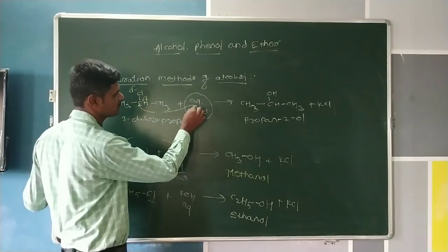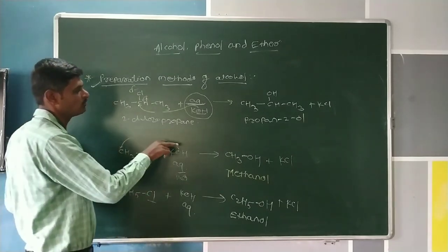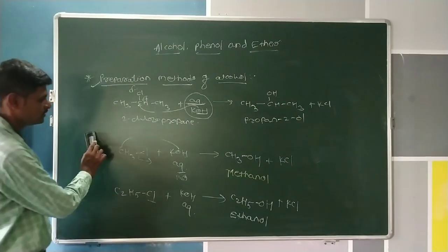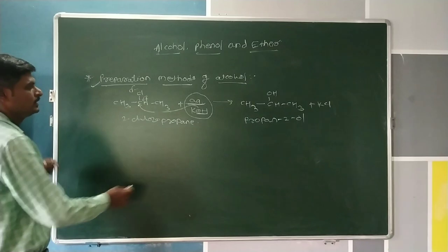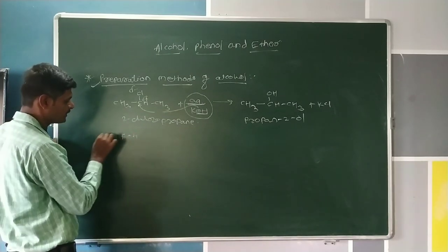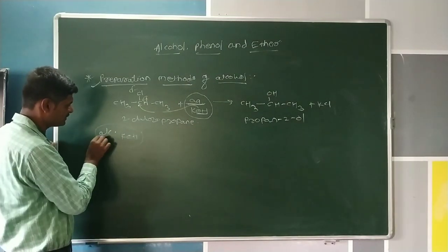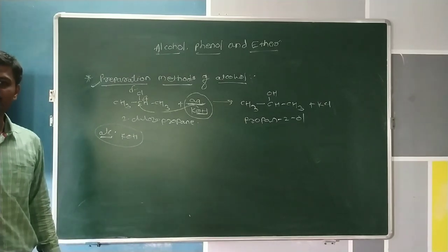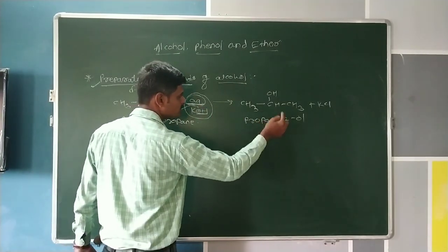In this aqueous KOH method, the medium of KOH is aqueous — aqueous is used as the solvent, and because of that the OH⁻ acts as a nucleophile. However, if we change the medium of KOH from aqueous to alcoholic, the respective product also changes. By using aqueous KOH reacted with alkyl halide, we get alcohol. But by using alcoholic KOH with alkyl halide, alcohol is not formed.